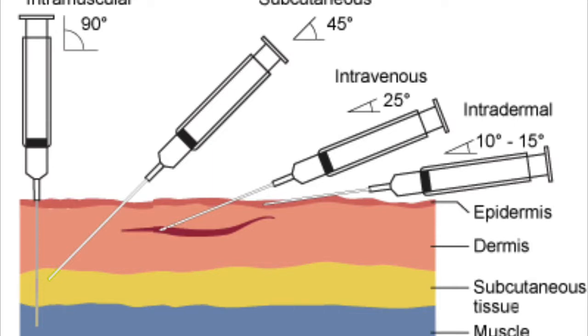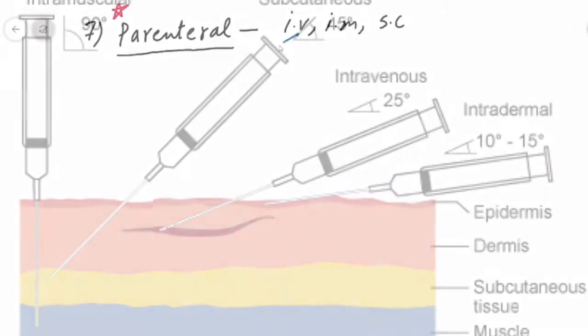Now we see intravenous. For that, we have to reach a layer just beneath the epidermis, so the angulation is made approximately 25 degrees. Then subcutaneous - it's a layer beneath the dermis, so the angulation has to be made more to achieve that. And for intramuscular it is 90 degrees.